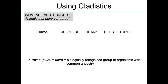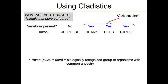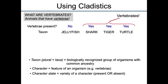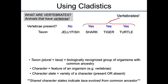Vertebrates are animals that all have vertebrae. So if we look at turtles and tigers and sharks and then we throw in a jellyfish — these are vertebrates here and the jellyfish we would call an outgroup. It's a group outside of your groups of interest. You would use that older, more basal group to help figure out which features are ancestral. A character state would be the flavor that a character takes on, and it's those shared characters that we want to look at.